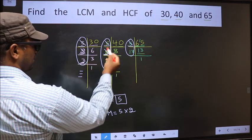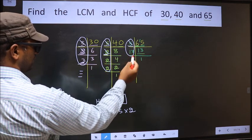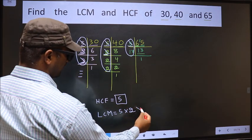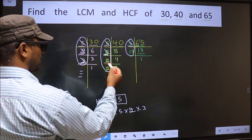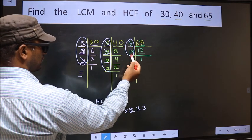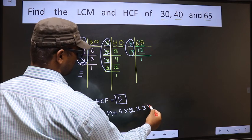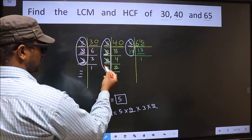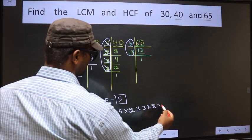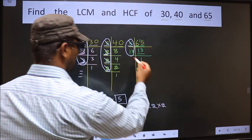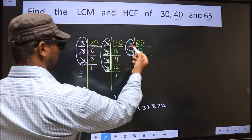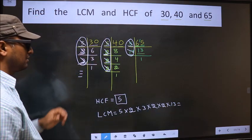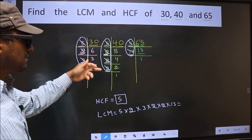Now 3 is not cut. Do we have 3 here? No. Do we have 3 here? No. 3 is present in only 1 place, so you cut 3 and write here. Now here, 2 is present in only 1 place, so you cut 2 and write here. Next number 2. Do we have 2 here? No. 2 is present in only 1 place, so you cut 2 and write here. Now, 13 is not cut. 13 is present in only 1 place, so you cut 13 and write here. Now, each number has been cut.